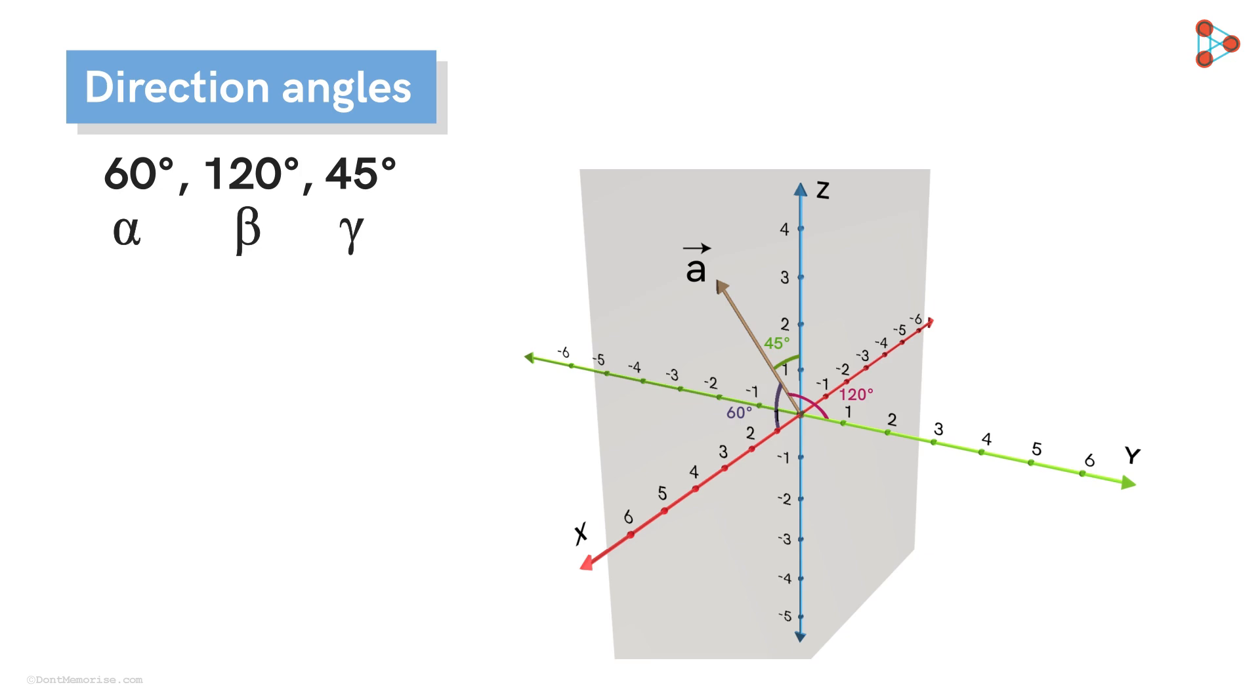Also, the range of each direction angle is between 0 and pi, including both 0 and pi. It is a condition or criterion that ensures uniqueness.